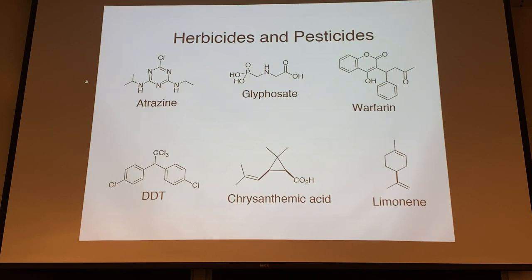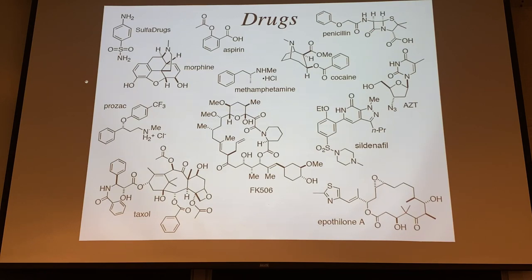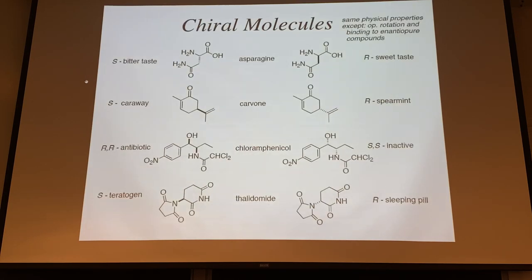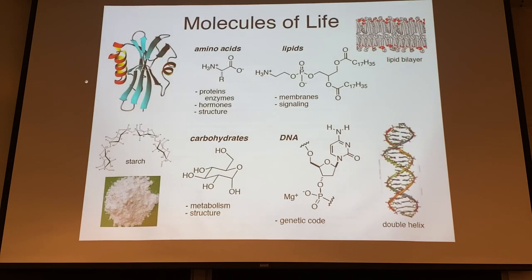Flavors and fragrances include vanillin from vanilla, muscone, skatol, capsaicin the hot pepper compound, aspartame artificial sweetener, and l-heptanoate which is the essence of banana. Herbicides and pesticides include glyphosate from Roundup, chrysanthemic acid from chrysanthemum flowers, limonene from lemons. And drugs - you've probably taken many of these: aspirin, penicillin, and more complex modern drugs with many stereocenters and functional groups.